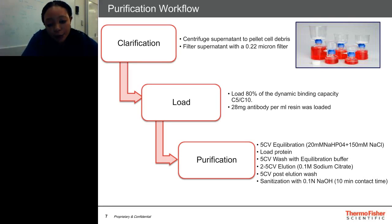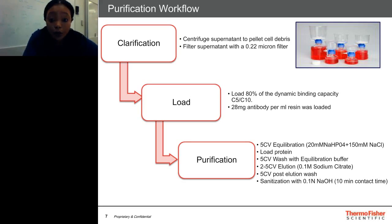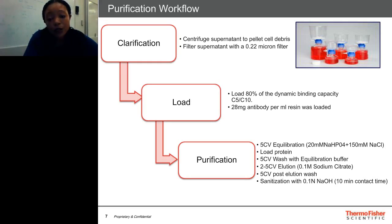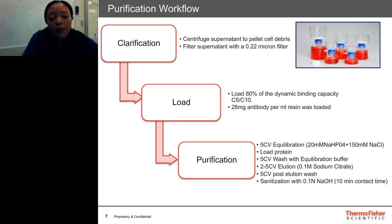For the AKTA method for purification, we did a 5 CV equilibration with 20 mM sodium phosphate and 150 mM sodium chloride. We then loaded the protein at 28 mg antibody per ml resin. Following that, we did a 5 CV wash with equilibration buffer, and then a 5 CV elution with 0.1 M sodium citrate. Following this, we neutralized with equilibration buffer and did a 5 CV post-elution wash, then sanitized the column with 0.1 N sodium hydroxide with a contact time of about 10 minutes.